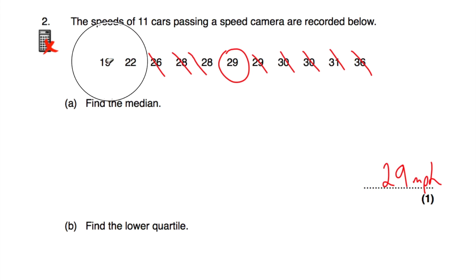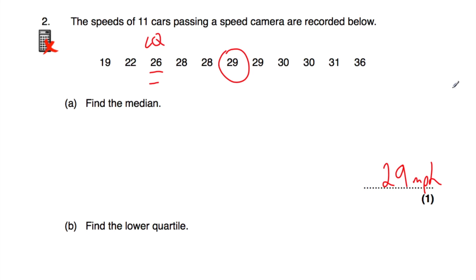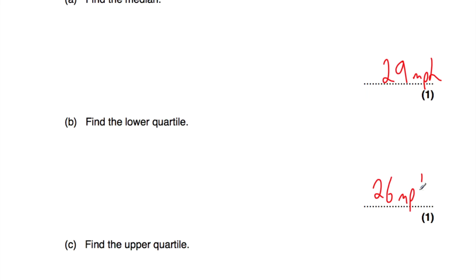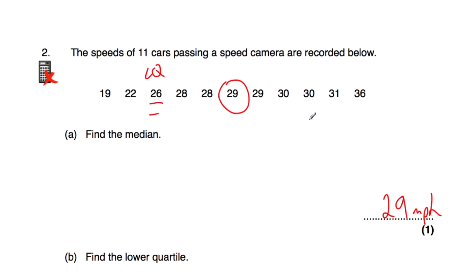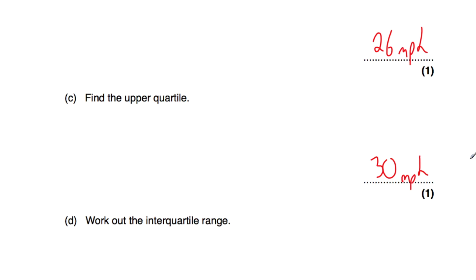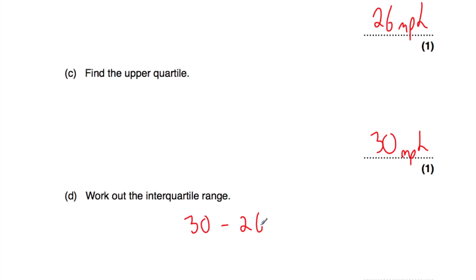Part B says find the lower quartile. We look at the bottom half of the data, ignore the median, and find the middle of those values — that's 26, so the lower quartile is 26 miles per hour. Part C, the upper quartile: we look at the top half of the data, ignore the median, and find the middle — that's 30, so the upper quartile is 30 miles per hour. Part D, the interquartile range: 30 subtract 26 equals 4 miles per hour.